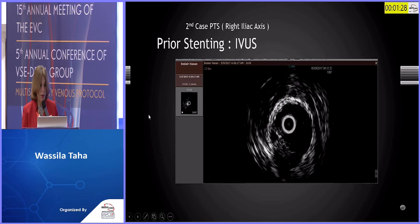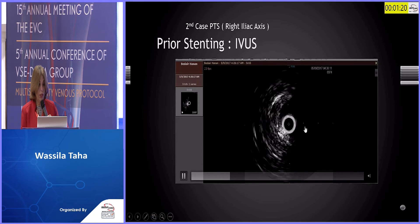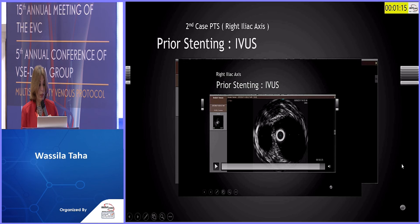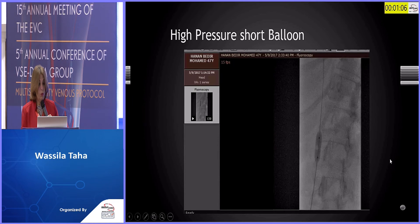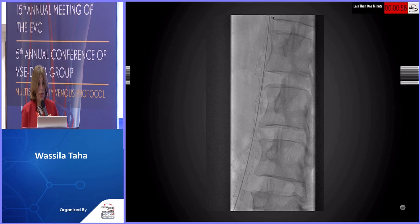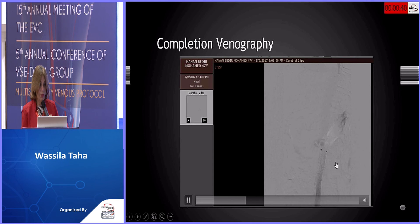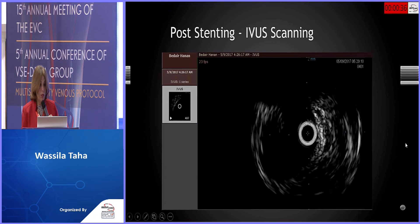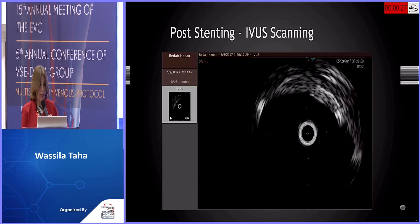Prior to stenting, we deployed IVUS and observed remnants and debris around the vessel. In the IVC — a large vein — on pullback we identified debris and remnants and calculated precisely the stent length needed. Pre-stenting ballooning was performed with a high-pressure short balloon, gradually increasing diameters. After stent deployment, significant residual stenosis was noted, so post-stenting dilatation was performed. The completion venography showed free flow up to the IVC, and the completion IVUS scan confirmed the success of the procedure by demonstrating full stent apposition on pullback.